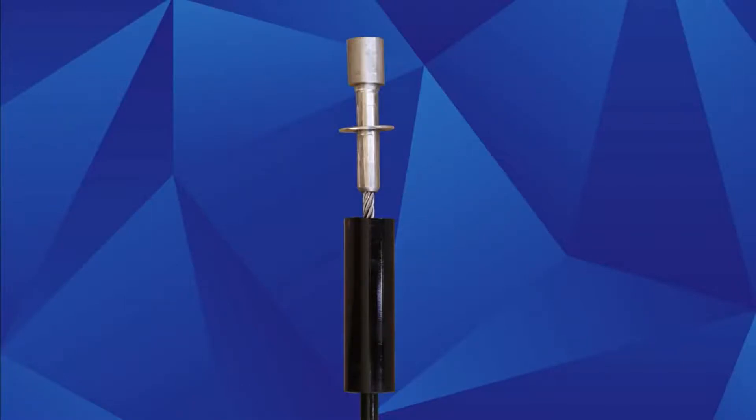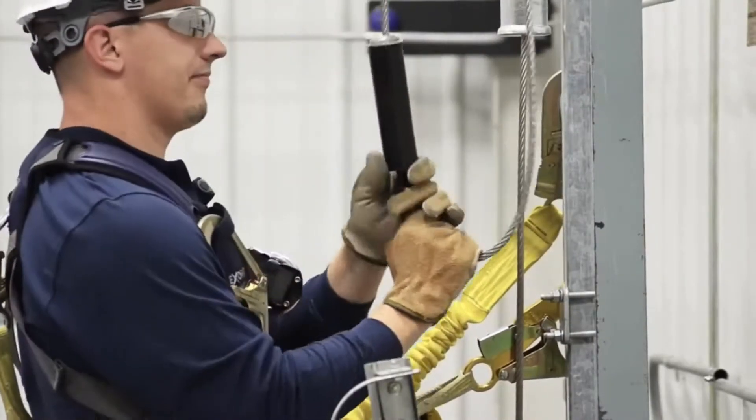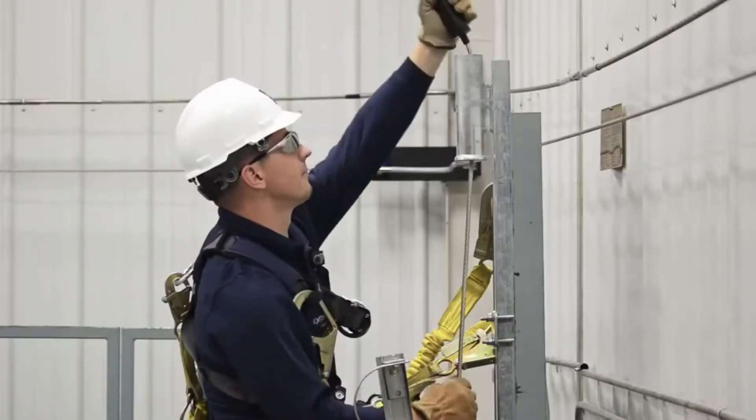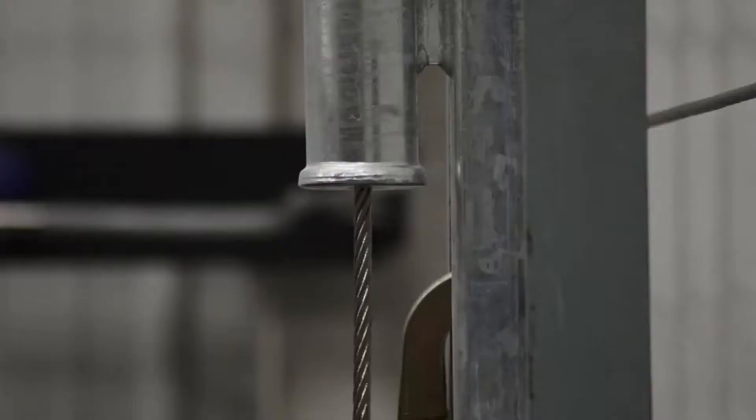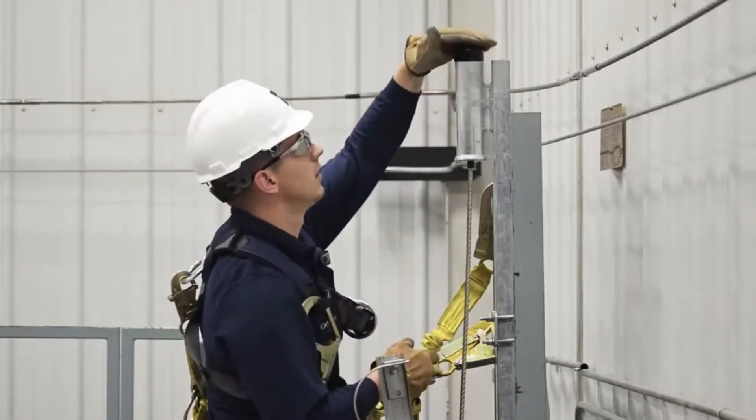If your system includes a stainless steel clamp, it will have already been swaged onto the cable at the factory. Slide the shock absorber over the carrier clamp until it is secure. At least one inch, but no more than two inches of cable, must protrude through the carrier clamp. Place the shock absorber into the bracket, and install the cap by seating it firmly onto the pipe.